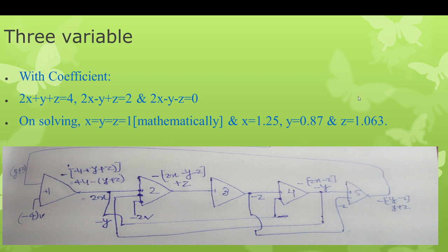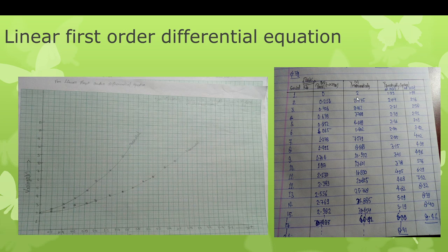For the linear first-order differential equation, I take a first-order equation, take readings, and plot them on a graph. The theoretical and experimental characteristics are nearly equal, with the minimum point also matching. There is not much difference, so this result is satisfactory.